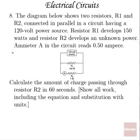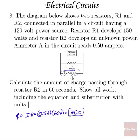Number 8: The diagram below shows two resistors, R1 and R2, connected in parallel in a circuit having a 120-volt power source. Resistor R1 develops 150 watts, and R2 develops an unknown power. Ammeter A in the circuit reads 0.5 ampere. Find the amount of charge passing through resistor R2 in 60 seconds. Well, the key here is if this ammeter reads 0.5 amps, then that must be the current through R2. So we know current through R2, we also know the time, we should be able to find charge. Q equals IT, which is 0.5 amperes times our time of 60 seconds, or just 30 coulombs for our answer.